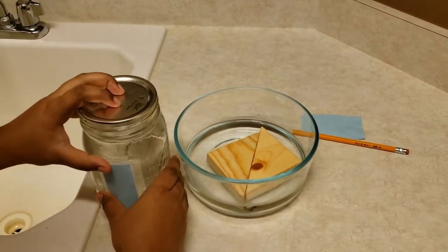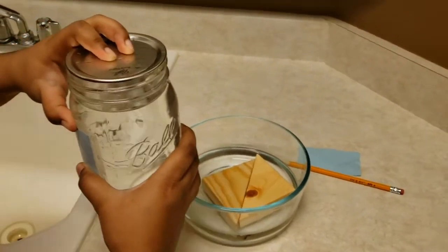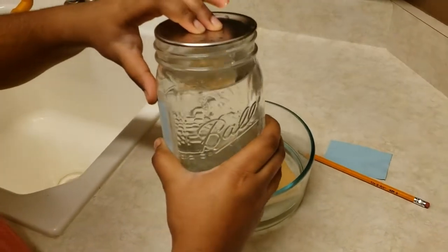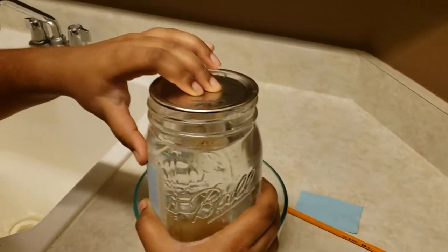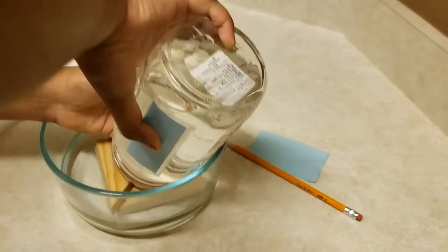Now cover the lid, cover the jar, make sure that nothing is really leaking. Then flip it upside down onto the wood planks.